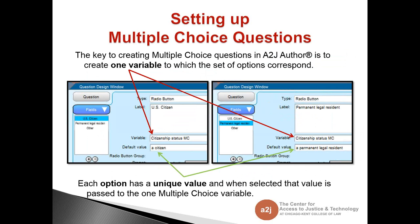The key to creating multiple choice questions in A to J Author is to create one variable to which the set of options correspond. Each option has a unique label and a unique default value. When the end user selects an option, that default value is passed on to Hot Docs. Both US citizen and permanent legal resident share the same variable — citizenship status MC — but different default values are passed to Hot Docs when each option is selected.